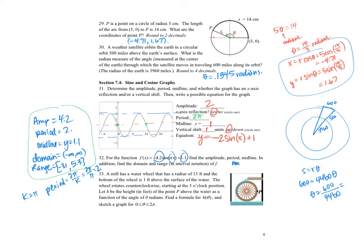Number 33. I have a mill, has a water wheel. It has a radius of 13 feet. And the bottom of the wheel is 1 foot above the surface of the water. The wheel rotates clockwise, starting at 3 o'clock position. Let h be the height above the water. Find a formula, h of theta, and sketch a graph for 0 to 2 pi.